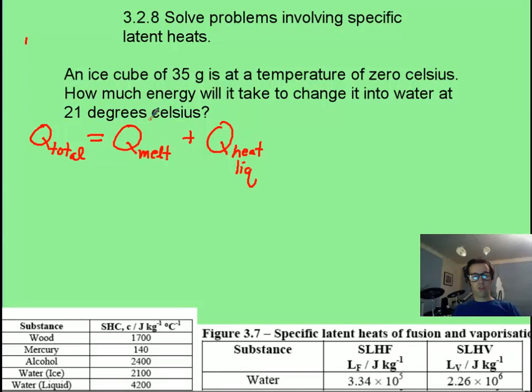So you've got your two terms, the heat to melt it, and then to heat the liquid water. And now we can fill in what goes in each term. For melting, that's going to be mass times your latent heat of fusion. For the liquid, that's going to be the same mass times specific heat capacity of liquid water times temperature change. Now it's just a matter of plugging in some numbers.